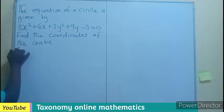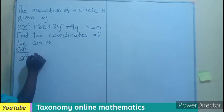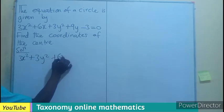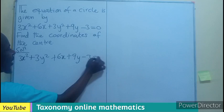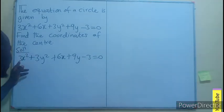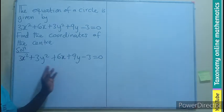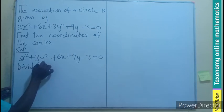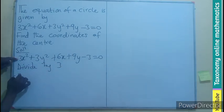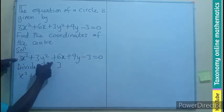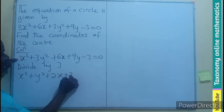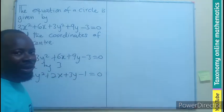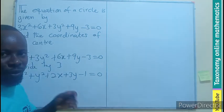So let's rewrite the equation: 3x² + 3y² + 6x + 9y - 3 = 0. We can see that the coefficients and the constant have a common factor. So let's divide through by 3, meaning we are having x² + y² + 2x + 3y - 1 = 0.